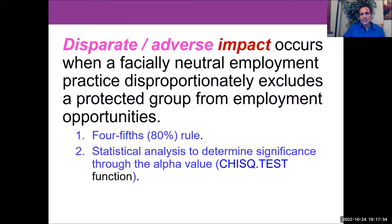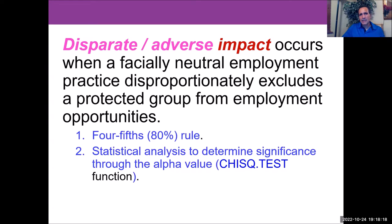In disparate impact, however, it is not intentional discrimination. Adverse impact occurs when a facially neutral employment practice disproportionately excludes a protected group from employment opportunities. We can use the 80% rule or four-fifths rule, or statistical analysis like a chi-squared test, to determine based on alpha value whether there was disparate impact on a protected group.